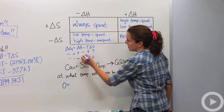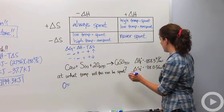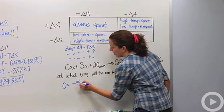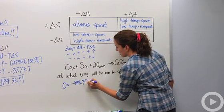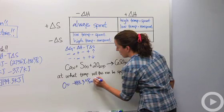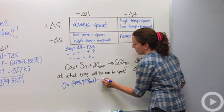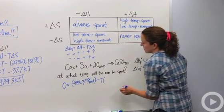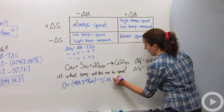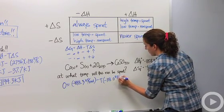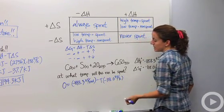When delta G equals zero: 0 equals delta H of negative 888.3 kilojoules per mole, minus temperature times delta S of negative 118.0 kilojoules per Kelvin. Now I want to isolate T.